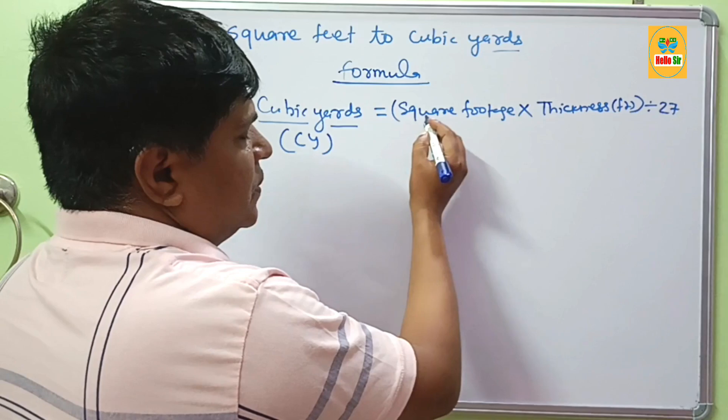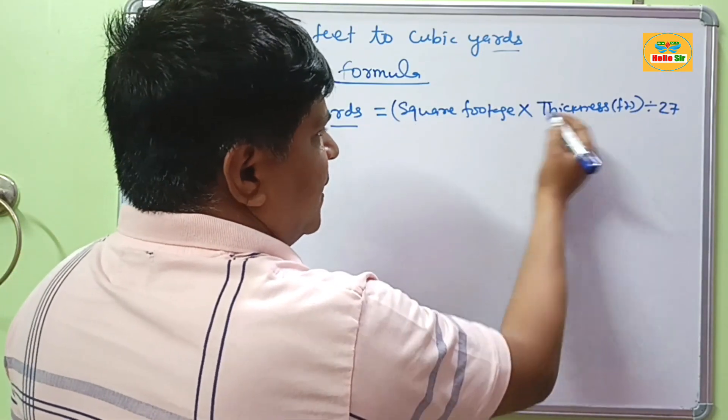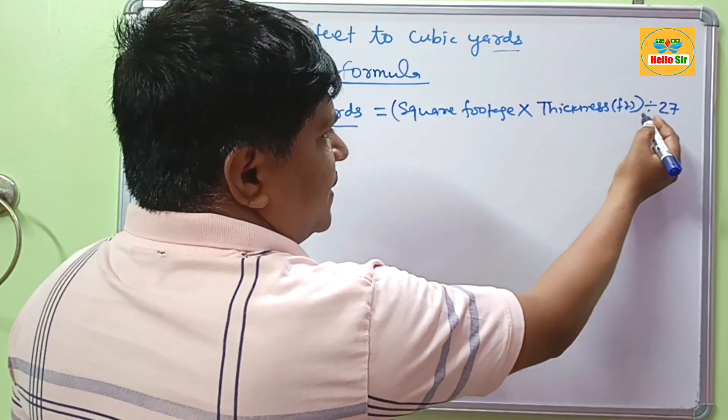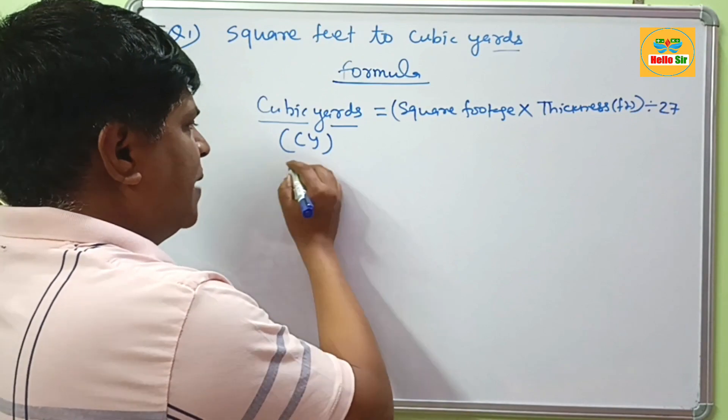Cubic yards equals square footage times thickness in feet, and the total cubic feet is divided by 27 to get 1 cubic yard. For example,